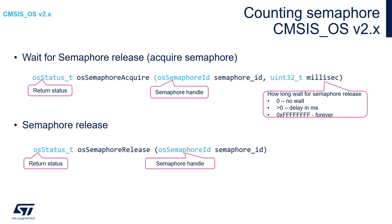For more details, you can refer to the osStatus_t description within the CMSIS-OS API section in this training. To release the semaphore, use the osSemaphoreRelease function with the semaphore handler as the only argument. This function also returns an osStatus_t value, where zero means successful execution and any negative value means an error.